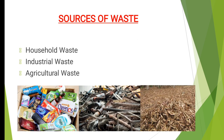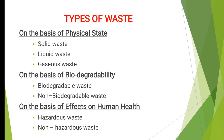These are the sources of waste: household waste, industrial waste and agricultural waste. These are the types of waste. The first is on the basis of physical state: solid waste, liquid waste and gaseous waste. The second is on the basis of biodegradability: biodegradable waste and non-biodegradable waste. The third is on the basis of effects on human health: hazardous waste and non-hazardous waste.